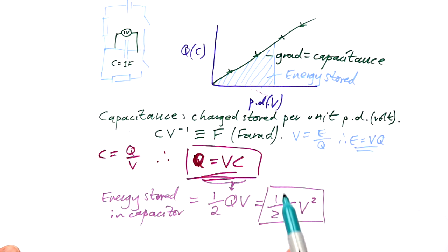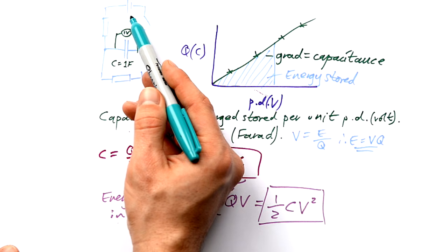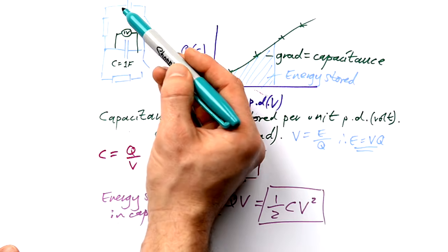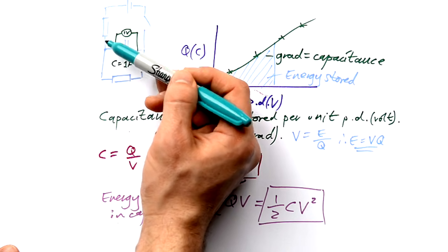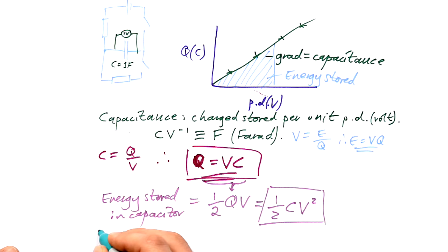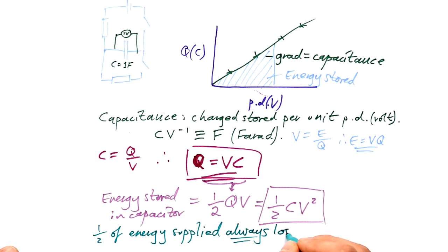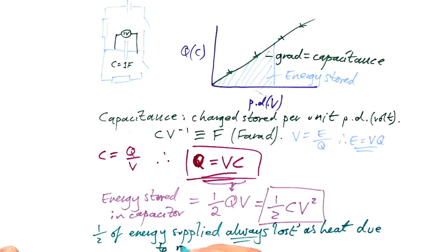You might wonder: if the energy given out by the battery is QV but we're only storing half QV, where has the other half gone? That's lost in the resistor — and if there's no resistor, it's lost in the wires. So when charging a capacitor, half of the energy is always lost as heat due to resistance. Unfortunately there's no way around that.